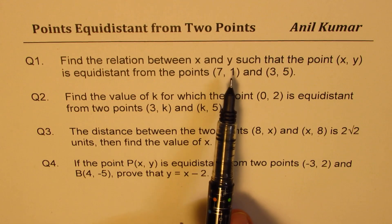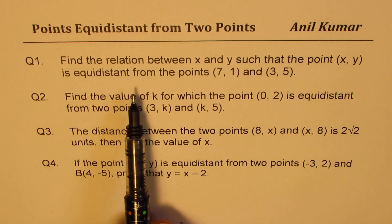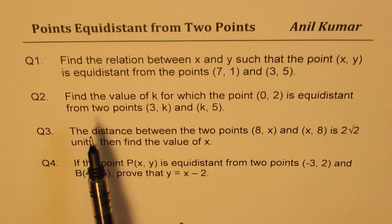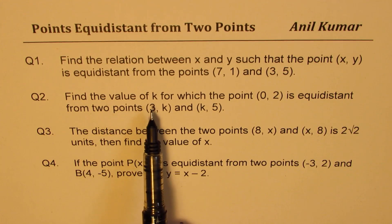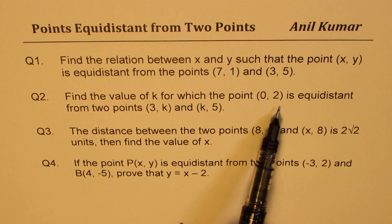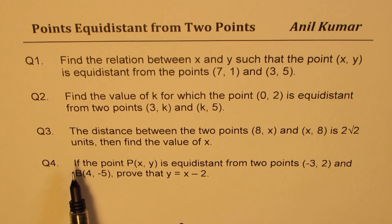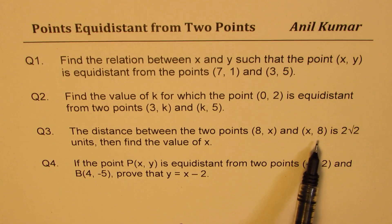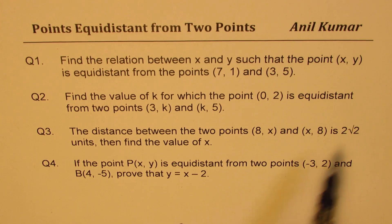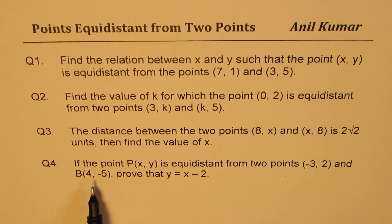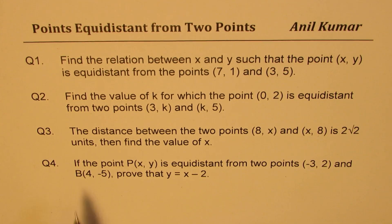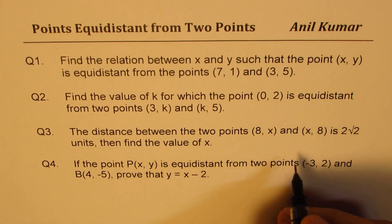Question 1: Find the relation between x and y such that point (x, y) is equidistant from points (7, 1) and (3, 5). Question 2: Find the value of k for which the point (0, 2) is equidistant from two points (3, k) and (k, 5). Question 3: Distance between two points (8, x) and (x, 8) is 2√2 units. Find the value of x. Question 4: If the point P(x, y) is equidistant from two points (-3, 2) and (4, -5), prove that y equals x minus 2.